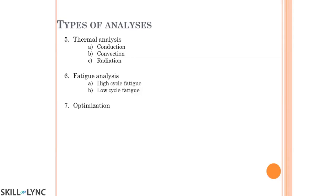Fatigue analysis accounts for repeated cyclic loading. Even if a component has not failed under a single static or dynamic load, repeated loading cycles can cause failure over time — like repeatedly picking up and putting down a glass of water. Based on the number of cycles, fatigue is classified into low cycle fatigue and high cycle fatigue, separated at around 10^5 cycles. You input the S-N curve into the solver, and it determines whether the part will fail for the given number of cycles.